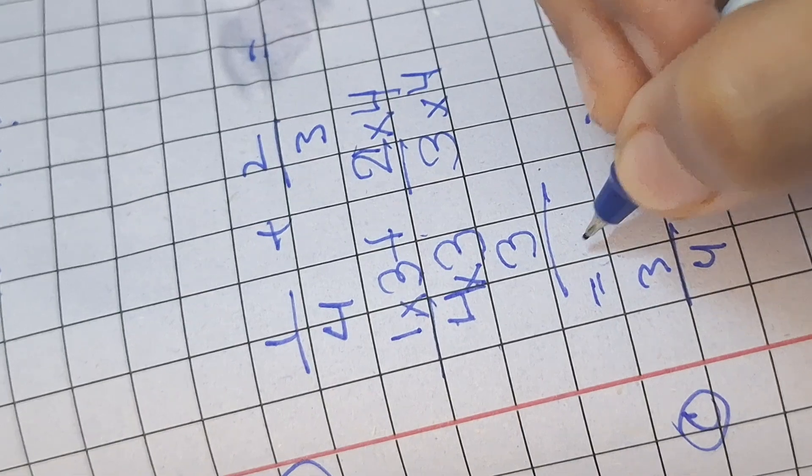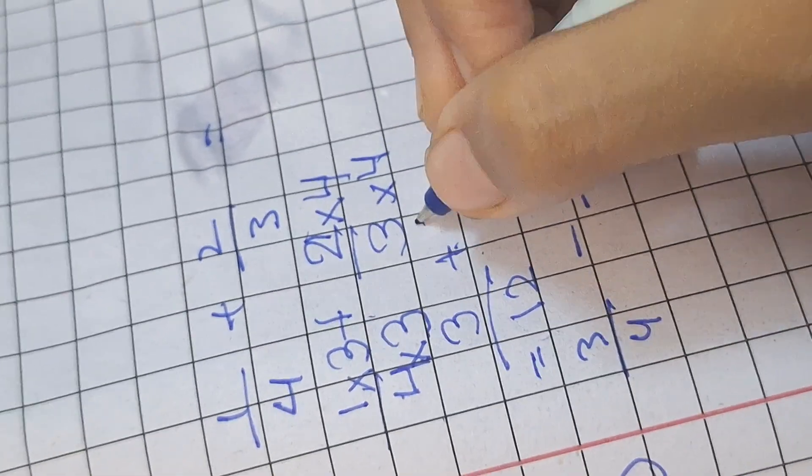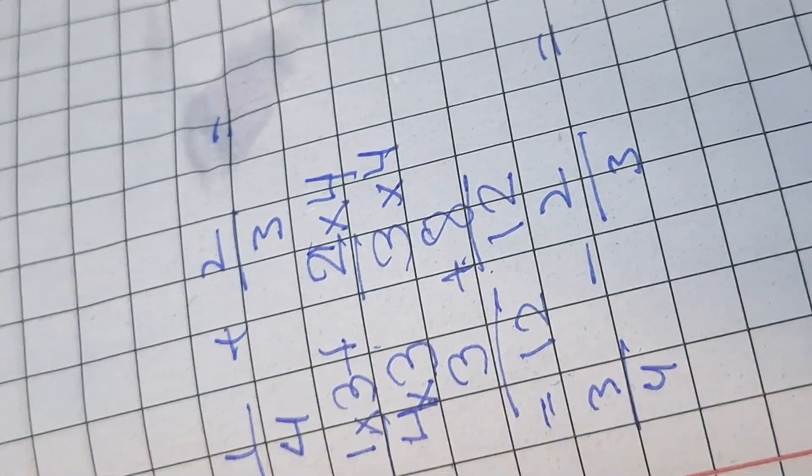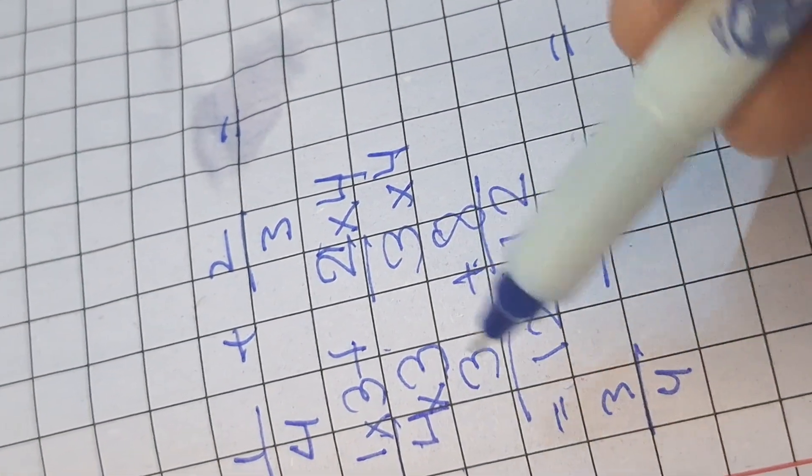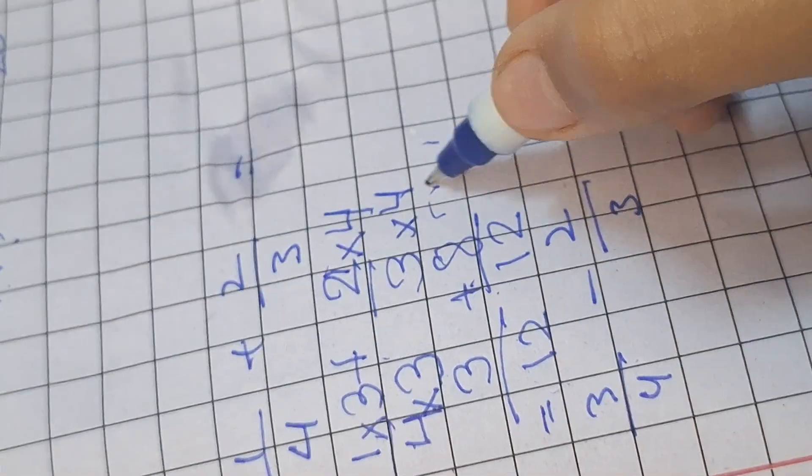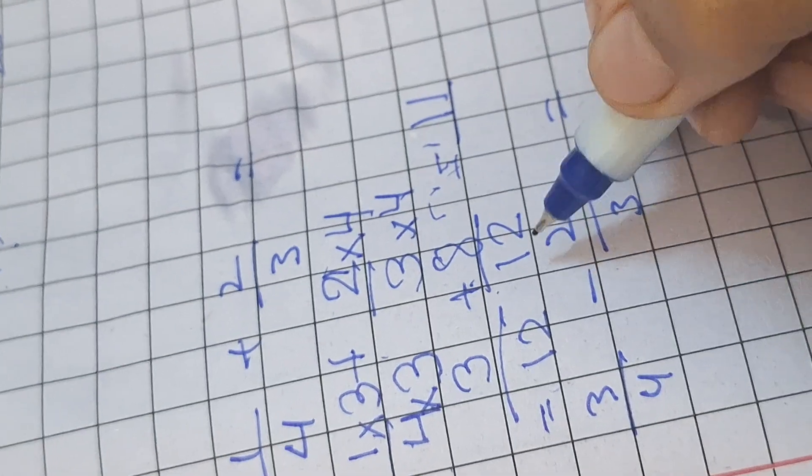4 times 2 is 8, 4 times 3 is 12, 3 times 4 is 12. Okay, so now we got the answer. So we're just gonna plus this real quick: 3 plus 8 is 11. The answer is 11 upon - remember what I told you -